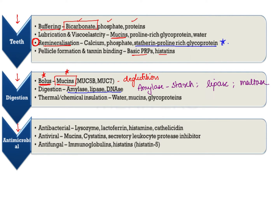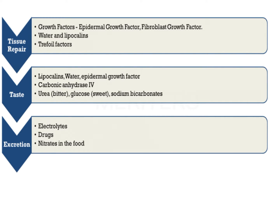The antimicrobial action of saliva is classified into antibacterial, antiviral, and antifungal effects. The most important components responsible for this are lysozyme, lactoferrin, histatins, cystatins, and secretory leukocyte protease inhibitor. These are some of the important components in saliva having antimicrobial effect. Another important function is the role of saliva in tissue repair.